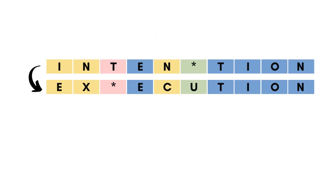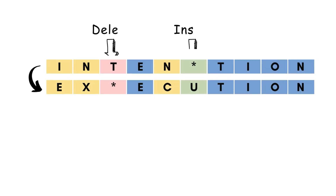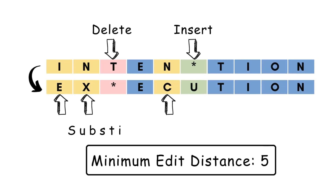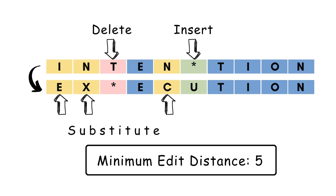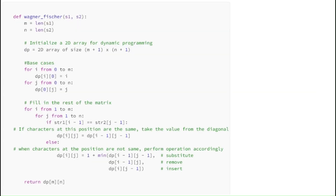Let us move on to another example: 'intention' and 'execution'. The minimum number of operations is achieved by replacing 'i' with 't', replacing 'n' with 'x', deleting 't', replacing 'n' with 'c', and inserting 'u'. As you can see, the minimum edit distance is 5 for 'intention' and 'execution'.